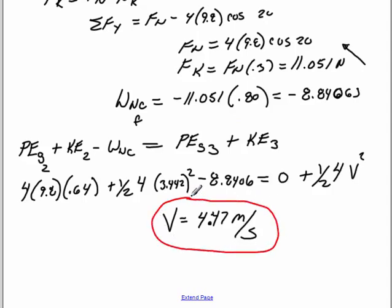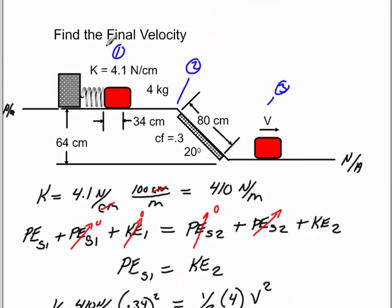That is how you work that problem. I worked from position 1 to 2, then from 2 to 3. You could have gone directly from 1 to 3 — it's your choice. From experience, it's easier to do the transitions step by step from one point to the next. You may also need the intermediate velocity at position 2 on some problems, so it's good to know how to find it. Best of luck.